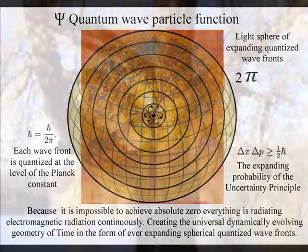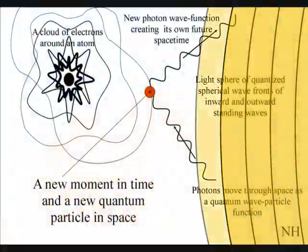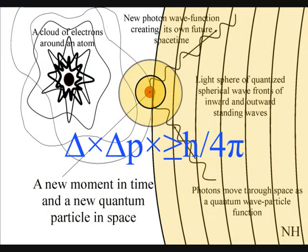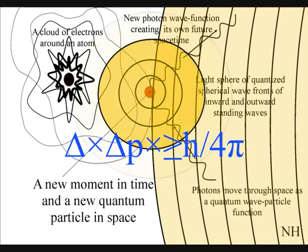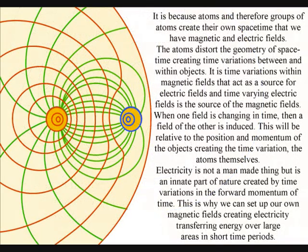In quantum atom theory, the atoms interact with light waves of electromagnetic radiation, continuously collapsing the quantum wave particle function, forming photons that form electrical charge and in turn form electromagnetic fields in three dimensions. This forms the local space-time geometry.